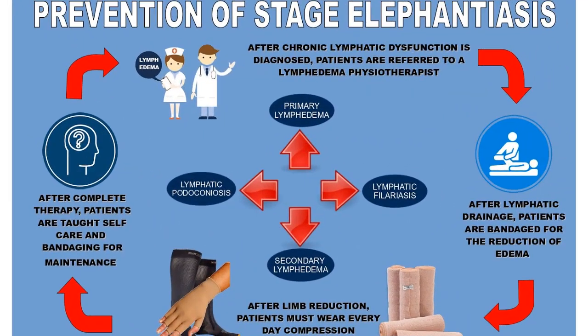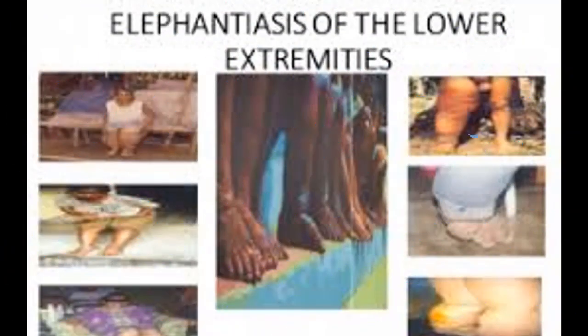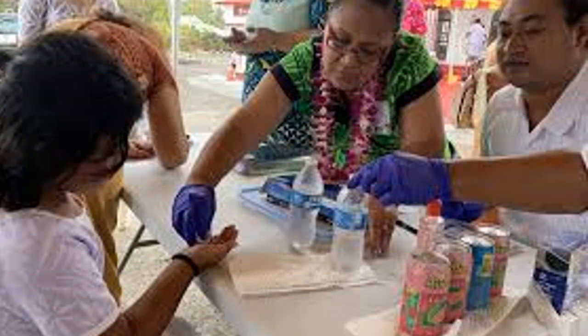Prevention. Prevention focuses on protecting against mosquito bites in endemic regions. Insect repellents and mosquito nets are useful to protect against mosquito bites. Public education efforts must also be made within the endemic areas of the world to successfully lower the prevalence of Wuchereria bancrofti infections.